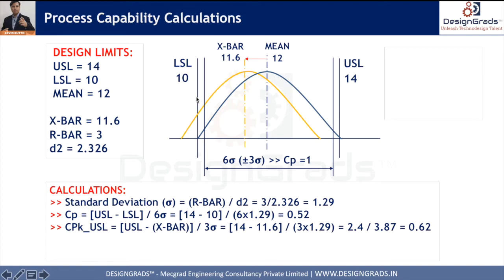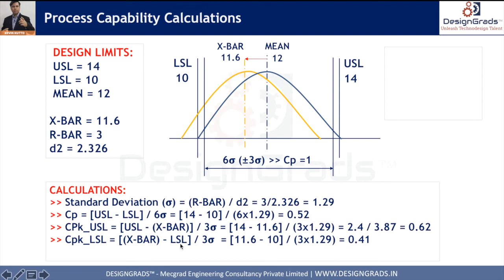For the lower side, Cpk (lower) = (X-bar − LSL) / (3 sigma). We take the minimum of the two Cpk values because whichever limit X-bar is closer to is where parts are most likely to go out of spec. In this example, the two values are 0.62 and 0.41, so Cpk = 0.41 (the minimum, corresponding to the Lower Specification Limit).